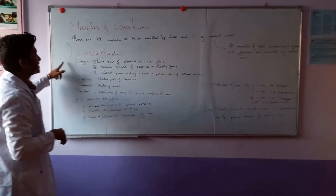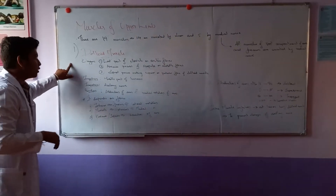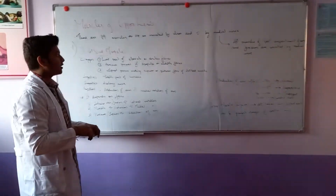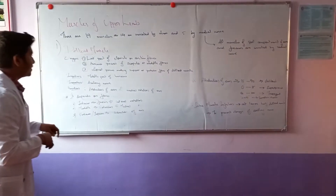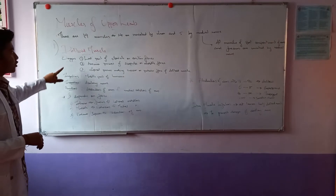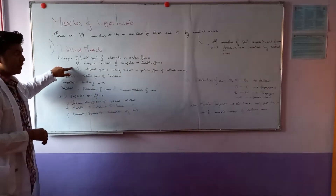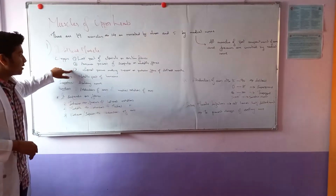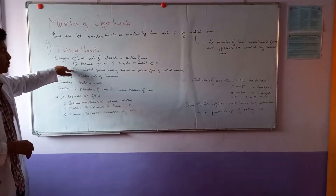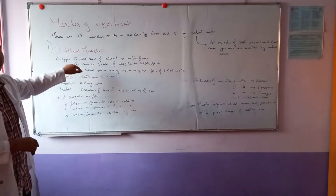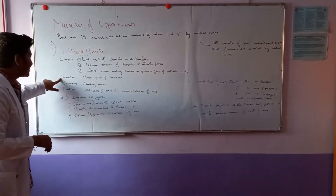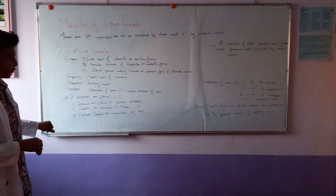The first muscle is the deltoid muscle. Its origin comes from three parts: the lateral part of the clavicle for the anterior fibers, the acromion process of the scapula for the middle fibers, and the spine of the scapula for the superior or posterior fibers. The insertion is at the middle part of the humerus.